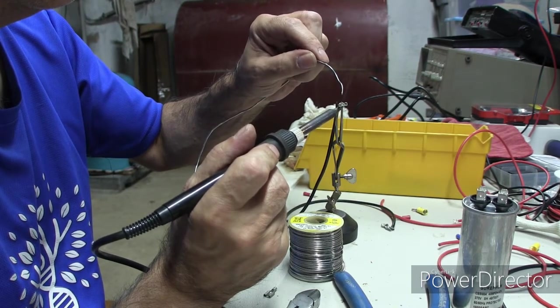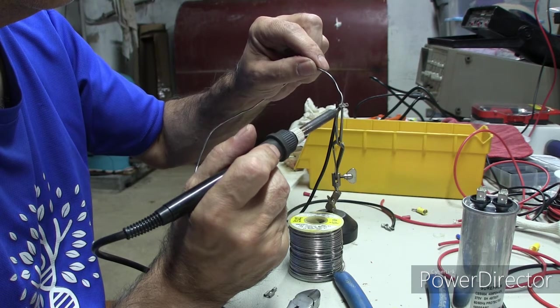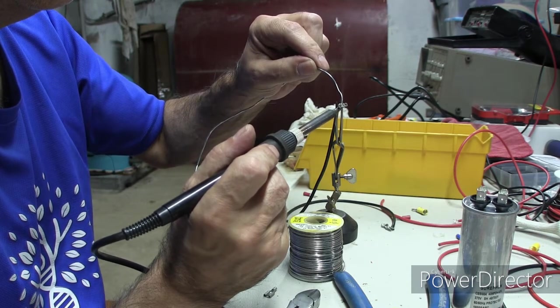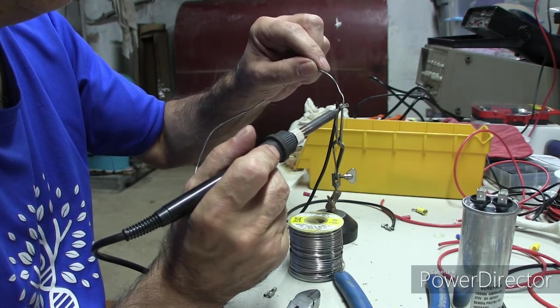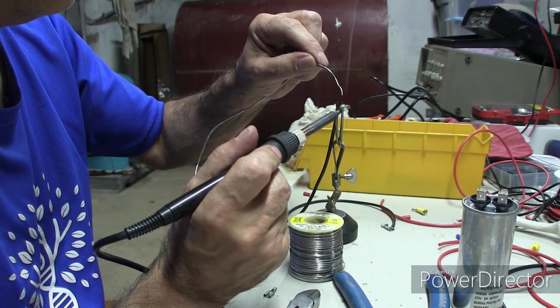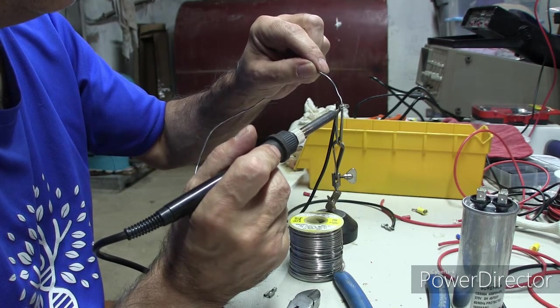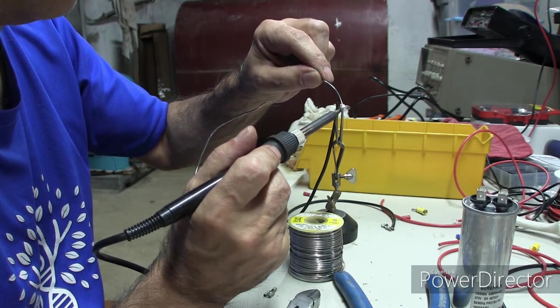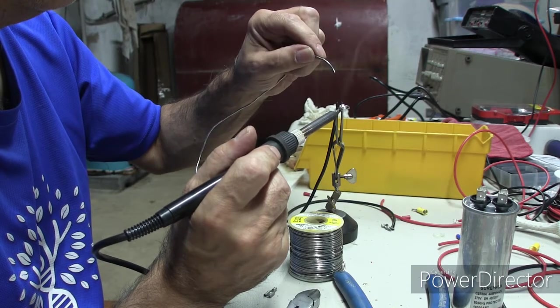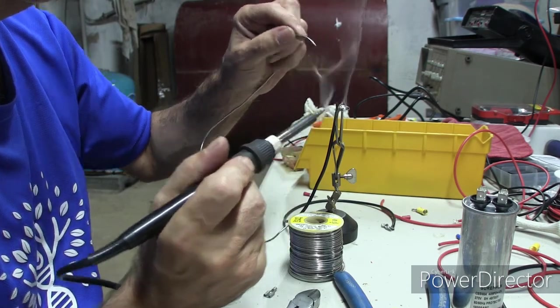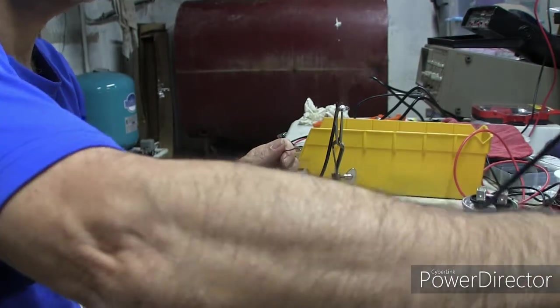So we'll heat this until we can get it to melt. You see it melt right there. And then I'll draw the iron down a little bit more towards the middle of this connector so I can actually pull the solder into the fitting. And there you have it.